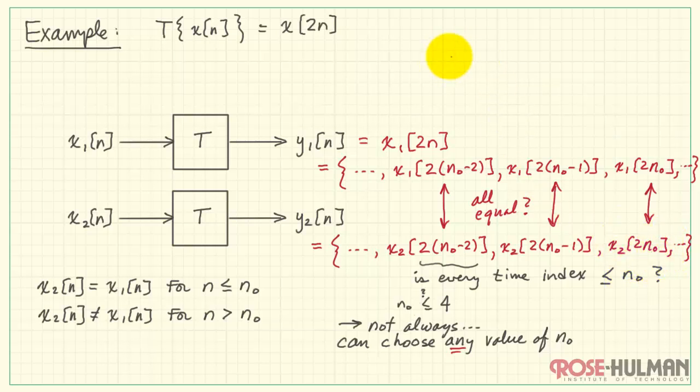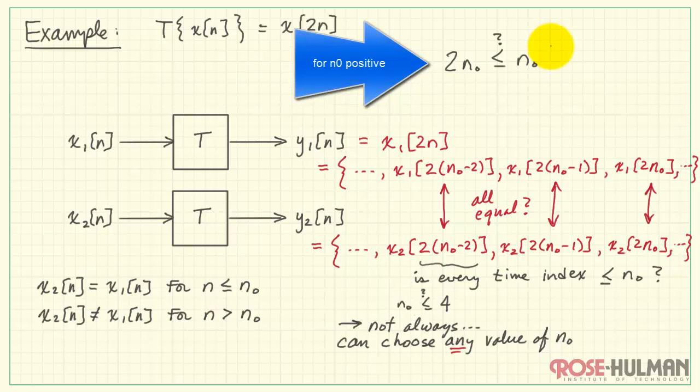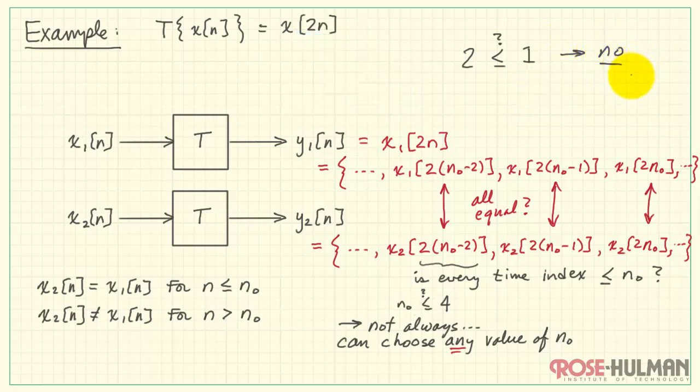Let's take a look at another place just to emphasize this point. Here we ask the question, is 2 n naught always less than or equal to n naught? At least for positive values, we see no, this is not the case. 2 is not less than or equal to 1.